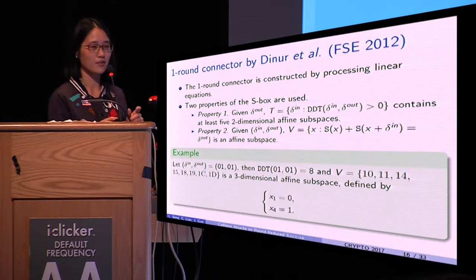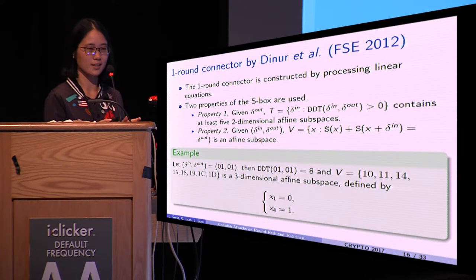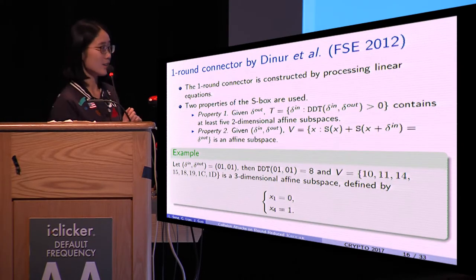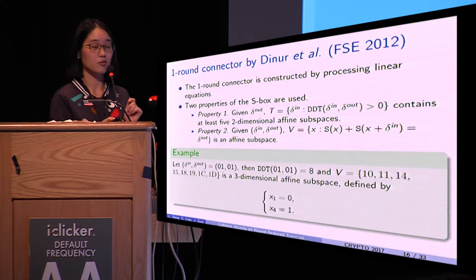Property two: given the input-output differences, the solution set forms an affine subspace. This is an example for property two.